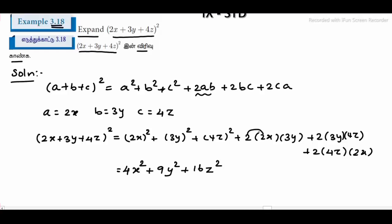2 times 2 times 4 square, 4 times 3 is 12, so plus 12xy. 2 times 3 is 6, 6 times 4 is 24, so 24yz. 2 times 4 is 8, 8 times 2 is 16, so 16zx.